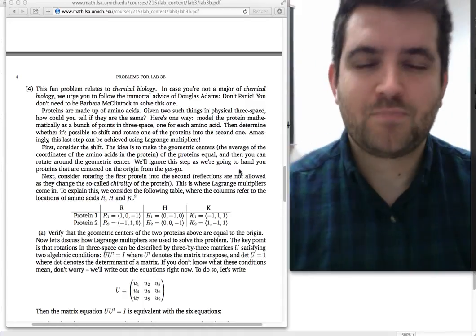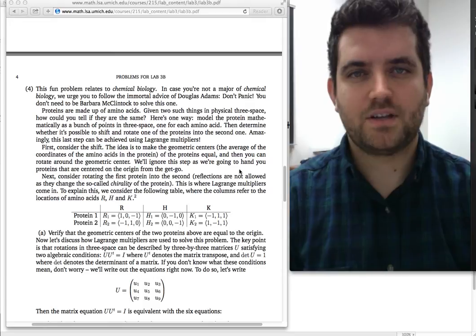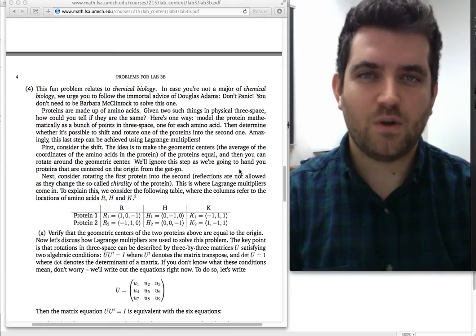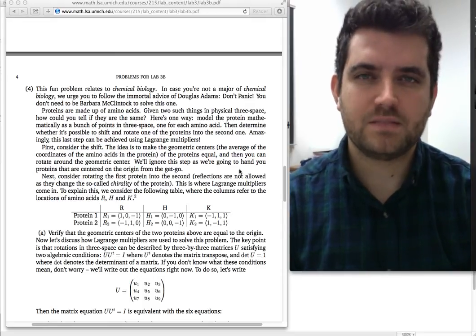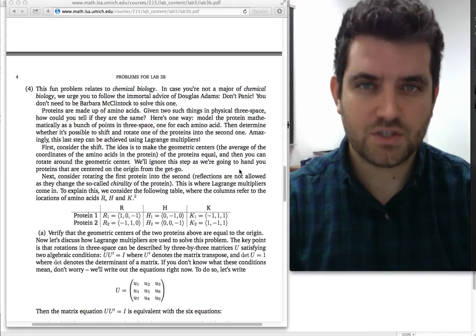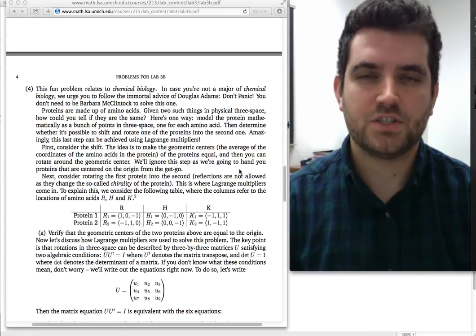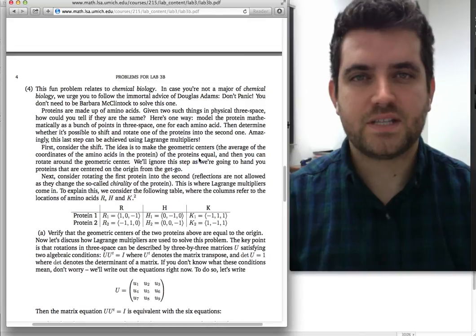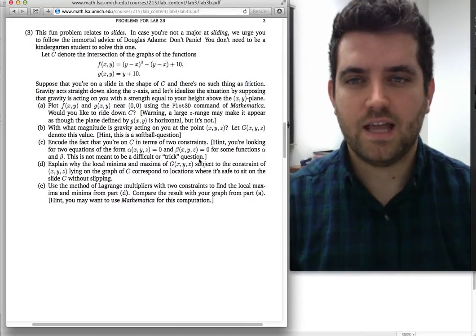Hi, everybody. So I just wanted to answer a couple questions about how to solve maximization and minimization problems with multiple constraints. This is Lagrange multipliers with multiple constraints.